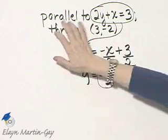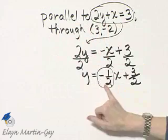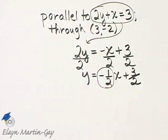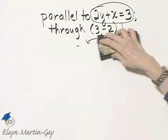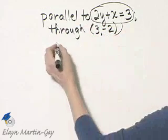Since I want a line parallel to this one, I simply use the same slope. So we'll use a slope of negative 1 half.